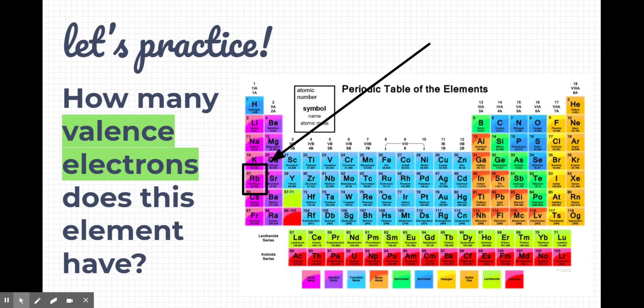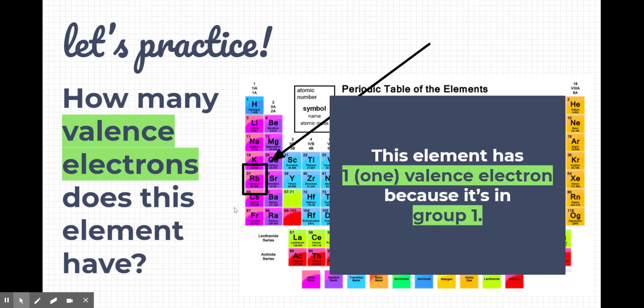How many valence electrons does this element have? Rubidium has one valence electron because it's in group 1, just like hydrogen, lithium, sodium, potassium, cesium. These all have one valence electron as well because they're in the same group.